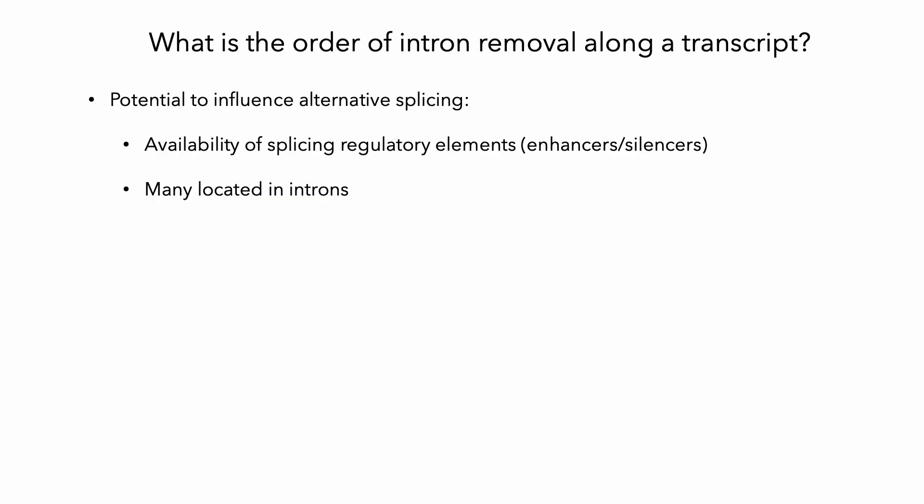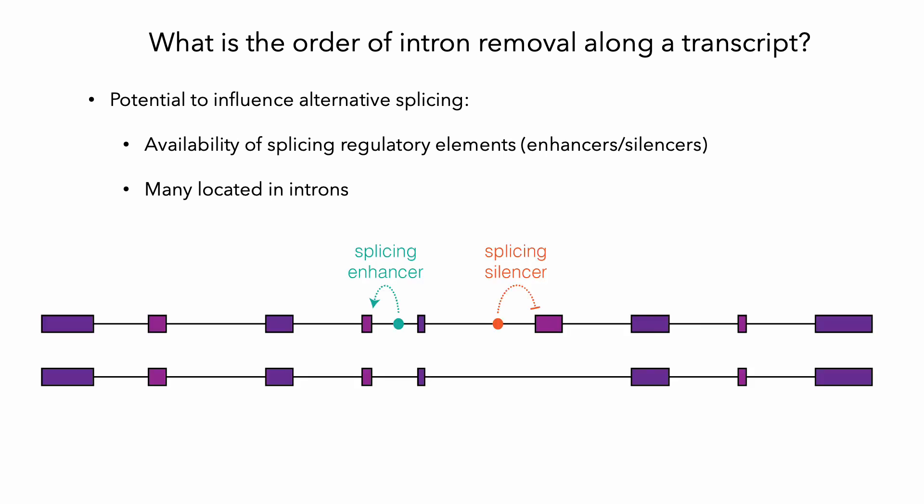Specifically, we've been studying the order in which introns are removed along the transcript. This is really important because it has the potential to influence alternative splicing by modulating the availability of splicing regulatory elements. Many of these elements are located in introns, so the order in which these introns are removed can determine how long each element is around to exert its effect.